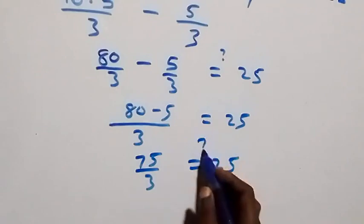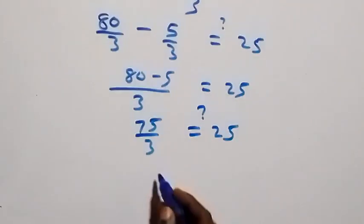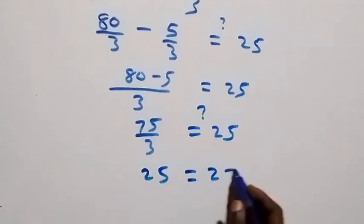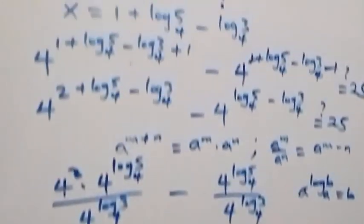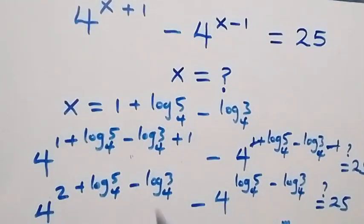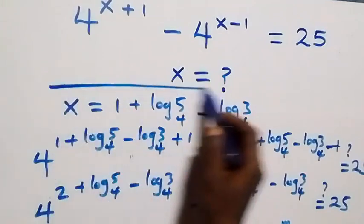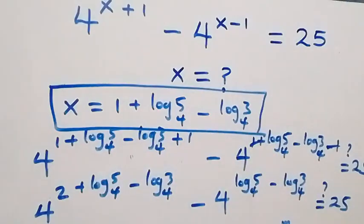75 over 3 is 25, which equals 25. The left-hand side equals the right-hand side, and hence we confirm that x equals 1 plus log 5 base 4 minus log 3 base 4 satisfies this problem. Thank you for watching — subscribe for more videos, turn on the notification bell, share this video, and see you next class.